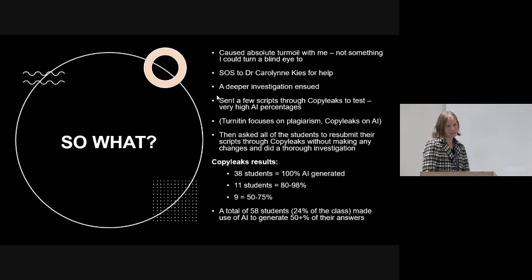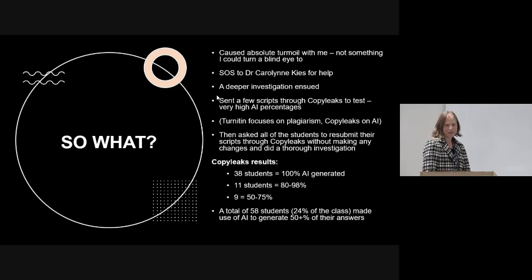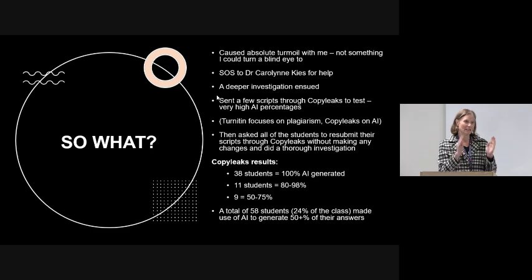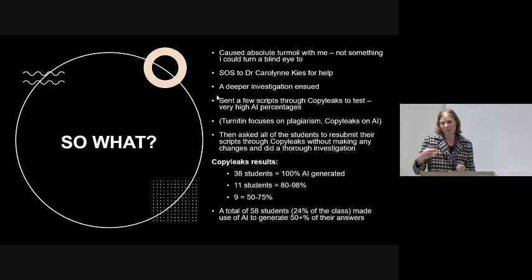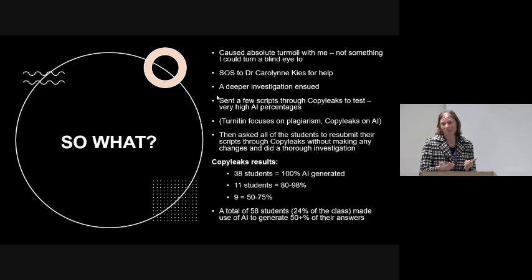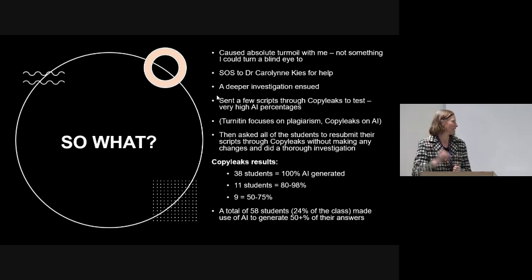The reason we submitted to CopyLeaks is that Turnitin is very good at picking up plagiarism, but CopyLeaks is better at picking up AI-generated text. Even though CopyLeaks also flags plagiarism — and that's the first percentage that comes up, which actually puts students at ease when they see 10 or 15 percent — when you go into the report, the AI percentage comes up.